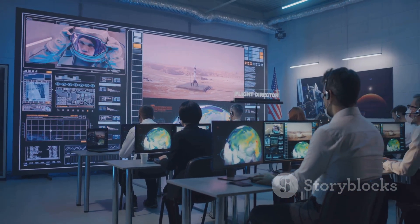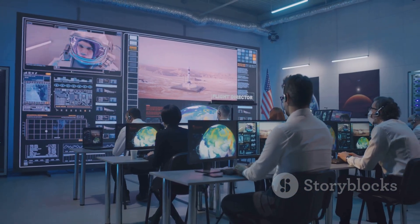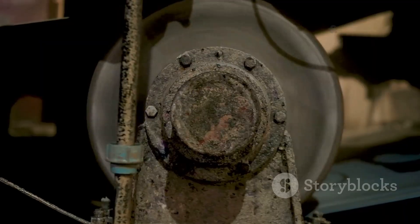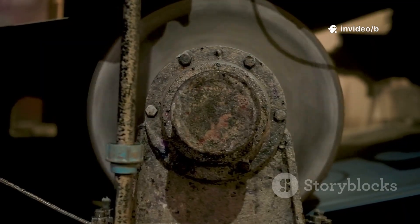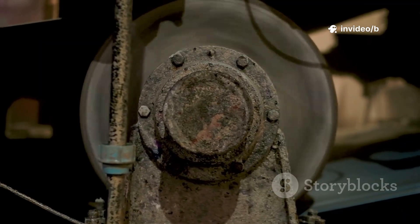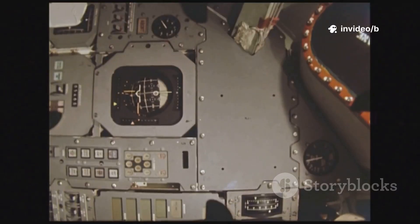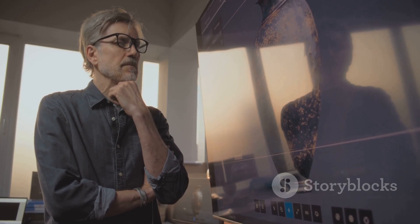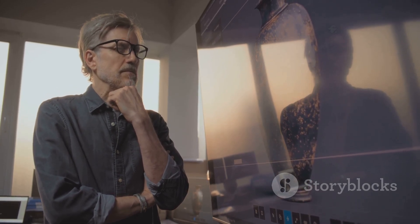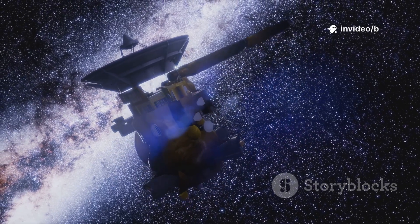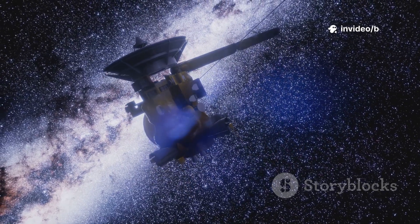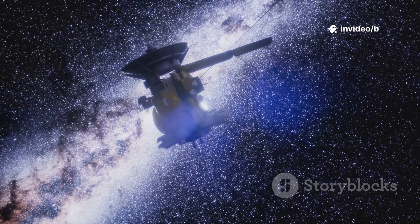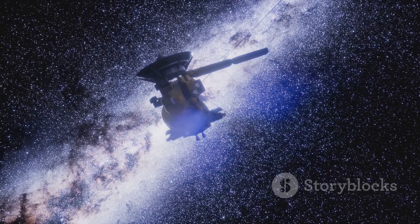Every great journey faces challenges and Voyager 2's are mounting. Its power comes from a radioactive battery fading after nearly five decades. Engineers have had to shut down instruments one by one to conserve energy. Each shutdown is a small loss, narrowing our window into the cosmos. The spacecraft is now over 12 billion miles away. Its signal is a faint whisper, taking over 19 hours to reach Earth.